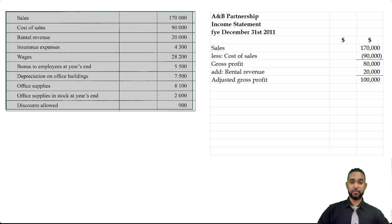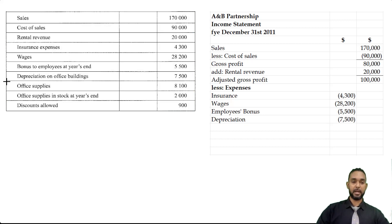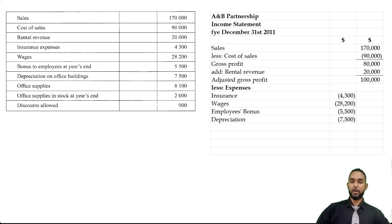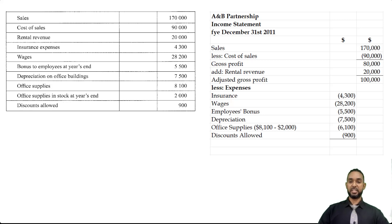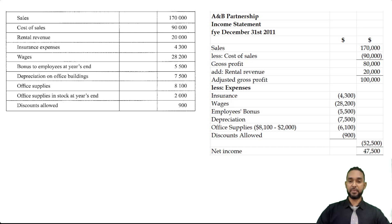Now we have expenses: insurance of $4,300, wages of $28,002, bonus to employees at year's end $5,500, depreciation on office buildings $7,500. For office supplies: we spent $8,100 but still have $2,000 worth in stock at year's end, so we used $6,100 — that's 8,100 minus 2,000. The last expense is discounts allowed of $900. Total expenses come to $52,500, which we subtract from the $100,000, giving us net income of $47,500.